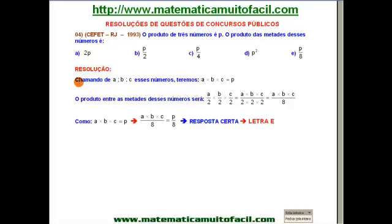Diz assim, chamando, vamos chamar então de A, B e C, esses três números, perfeito? E aí teremos, pelo que o problema nos coloca, que o produto desses três números, A vezes B vezes C, isso é igual a P, perfeito?